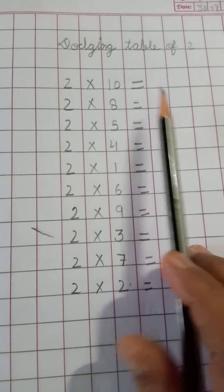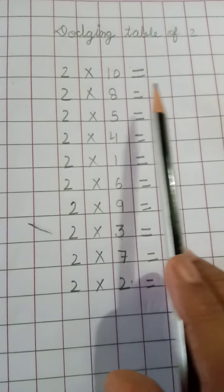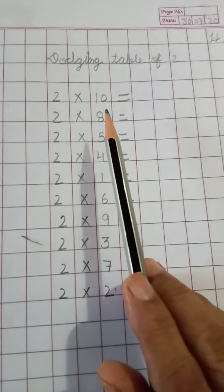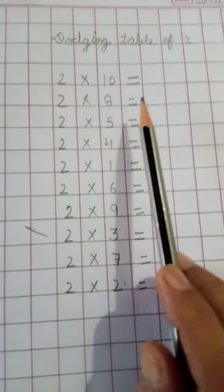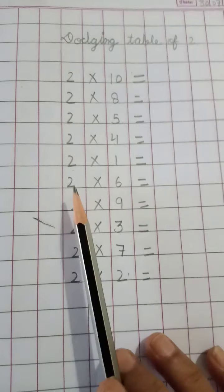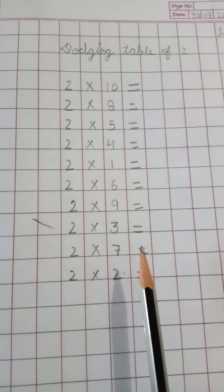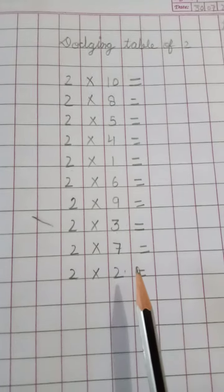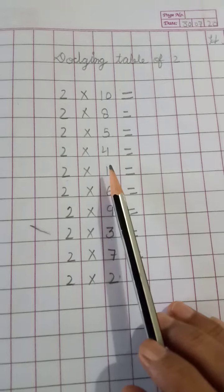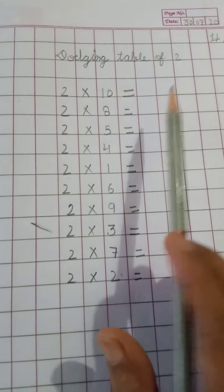In the simple table: 2 ones are 2, 2 twos are 4. But in the dodging table, I write them in the middle, randomly: 2 tens are, 2 eights are, 2 fives are, 2 fours are, 2 ones are, 2 sixes are, 2 nines are, 2 threes are, 2 sevens are, and 2 twos are. You have to write the answers. No, I just put it on my screen — you must write it yourself.